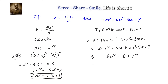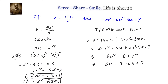Now we will again replace the x squared term in terms of x. Multiplying 2x squared equals 2x plus 1 by 3, we get 6x squared equals 6x plus 3. Substituting, we have 6x plus 3 minus 6x plus 7. The 6x terms cancel, leaving 3 plus 7, which equals 10.